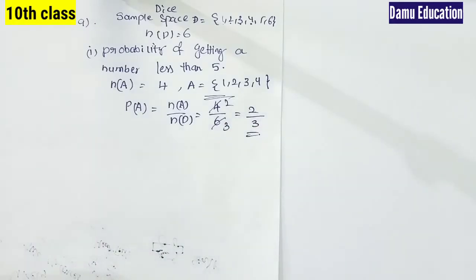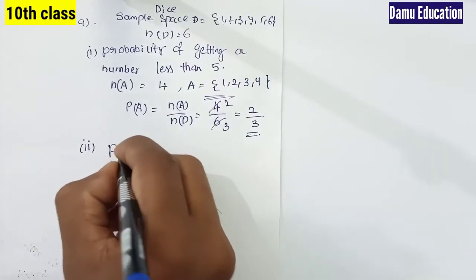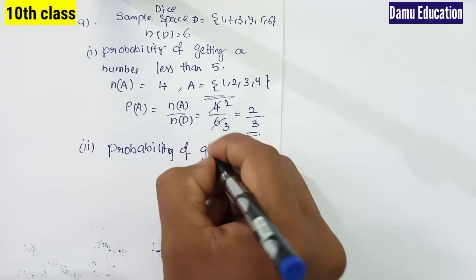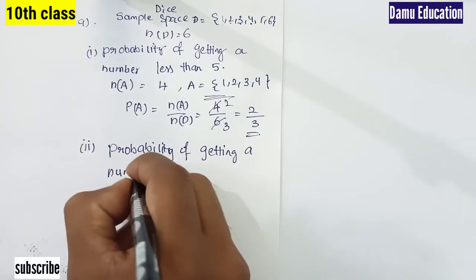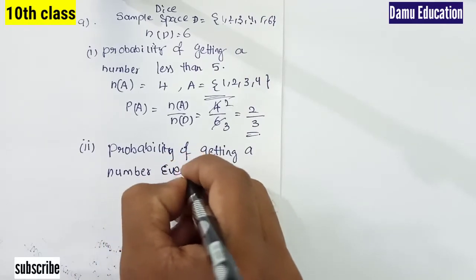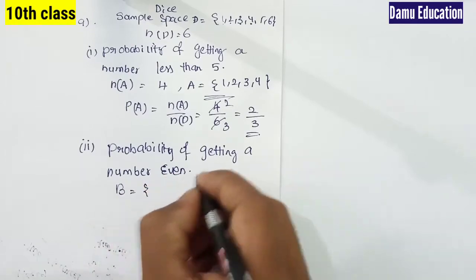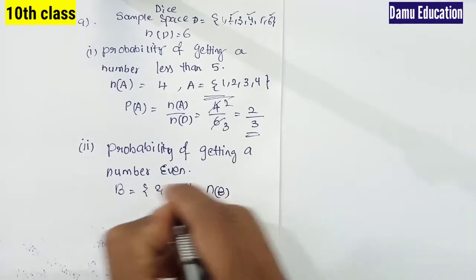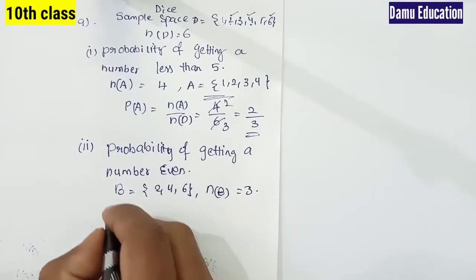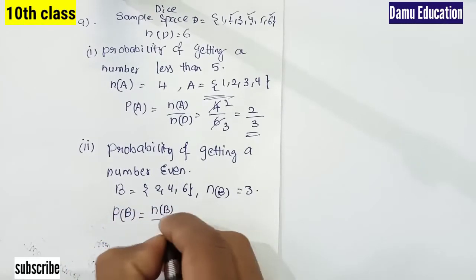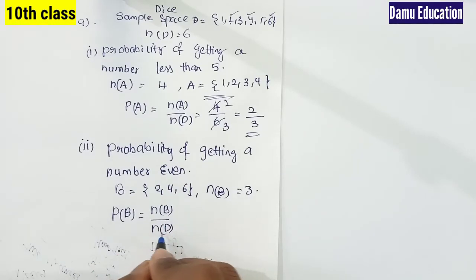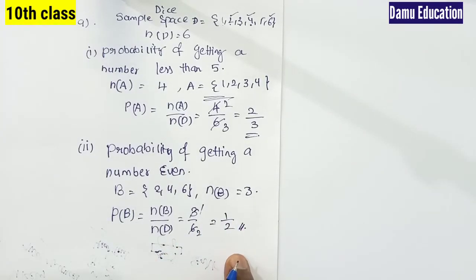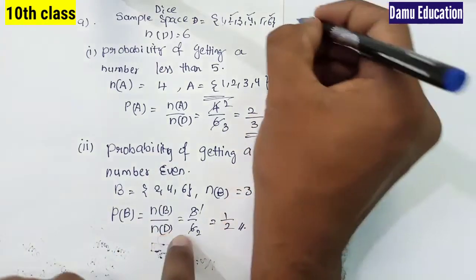Second problem: probability of getting an even number. Let B be the event. Even numbers from the sample space are {2, 4, 6}, so there are three numbers. P(B) = 3/6 = 1/2.